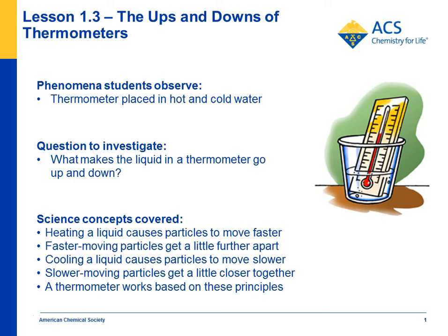Lesson 1.3. Students put a thermometer in hot water and in cold water and observe the way the red liquid moves up and down. Of course, they know that's what a thermometer does, but in this case the thermometer is used as a device to show that heating increases molecular motion and cooling decreases molecular motion. So they ask the question: what makes the liquid in a thermometer go up and down on the molecular level?